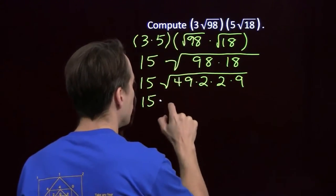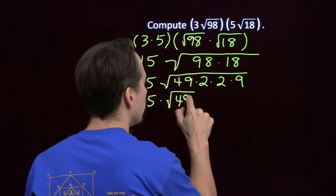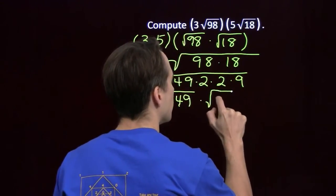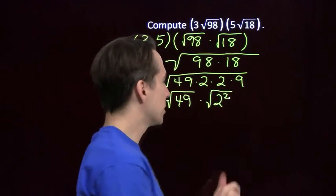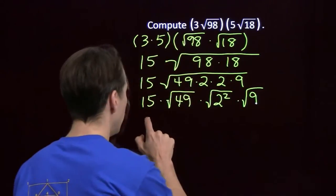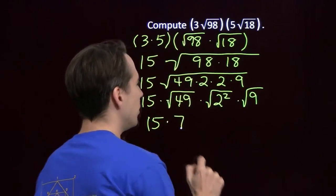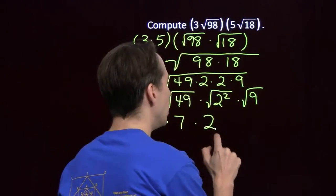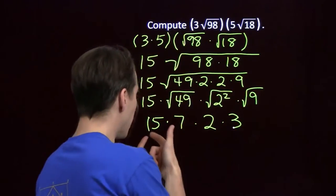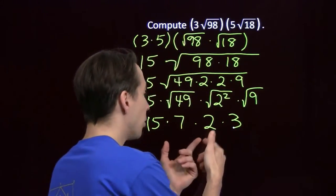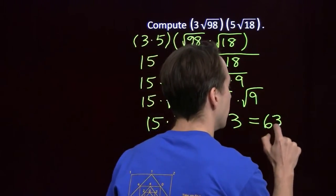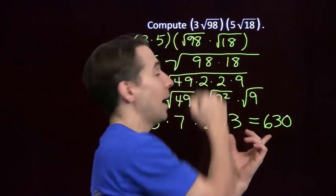So I've got 15 times the square root of 49, and I'm gonna keep the two 2's together because that's 2 squared, so that's times the square root of 2 squared, and times the square root of 9. The square root of 49 is just 7, the square root of 2 squared is just 2, and the square root of 9 is 3. 15 times 2 is 30, 30 times 3 is 90, 90 times 7 is 630. And that's way nicer to look at than that mess up there.